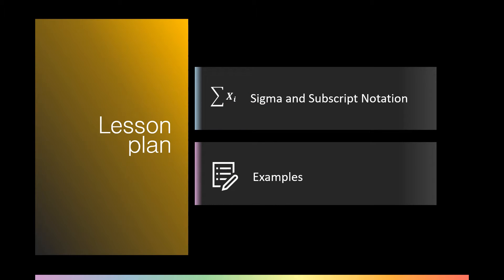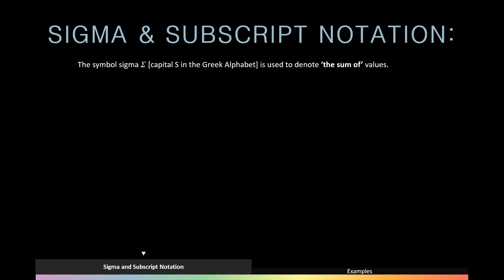Today we have a quick lesson to cover sigma and subscript notation. Now the symbol sigma looks like a capital E from the English alphabet, but it's actually a capital S from the Greek alphabet and it's used to note the sum of values.